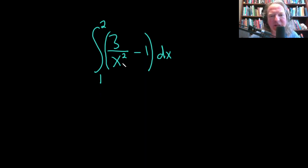So we'll start by taking this x squared and bringing it upstairs. This becomes the definite integral from 1 to 2 of 3x to the negative 2 minus 1, dx.